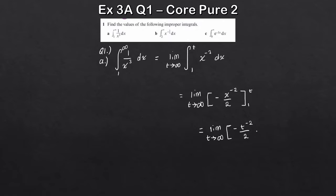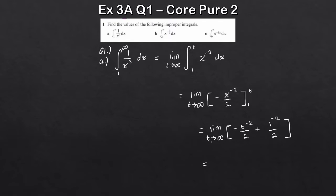Remember, when performing the integration you minus off the second limit — so it's minus of a minus, which becomes plus. So it's plus 1 to the minus 2 divided by 2, which is just 1 over 2. Now, as t tends to infinity, t to the minus 2 tends to 0 — you can test this on your calculator with a large number. So we get 0 plus 1 half, meaning the integral converges to 1 half.